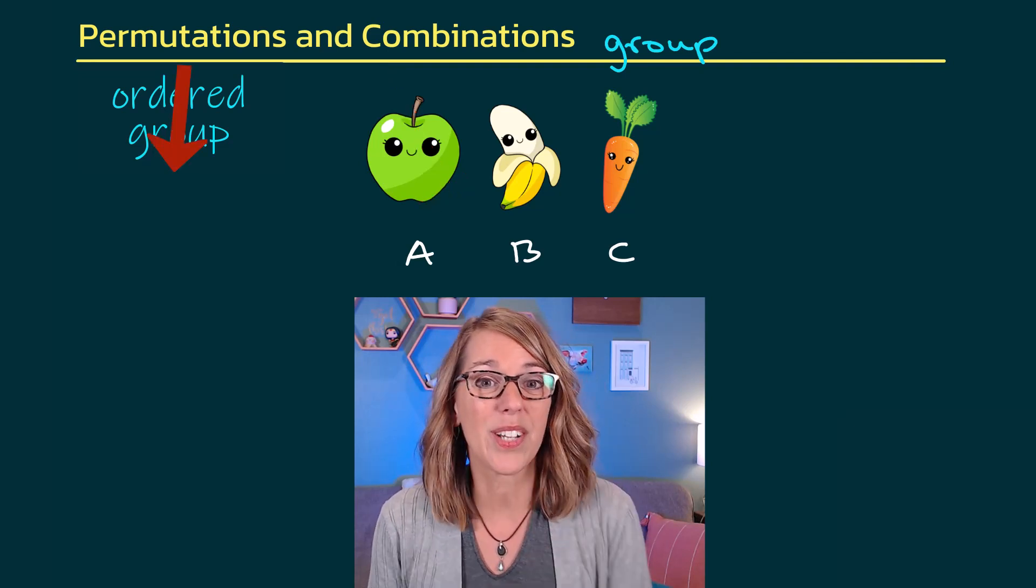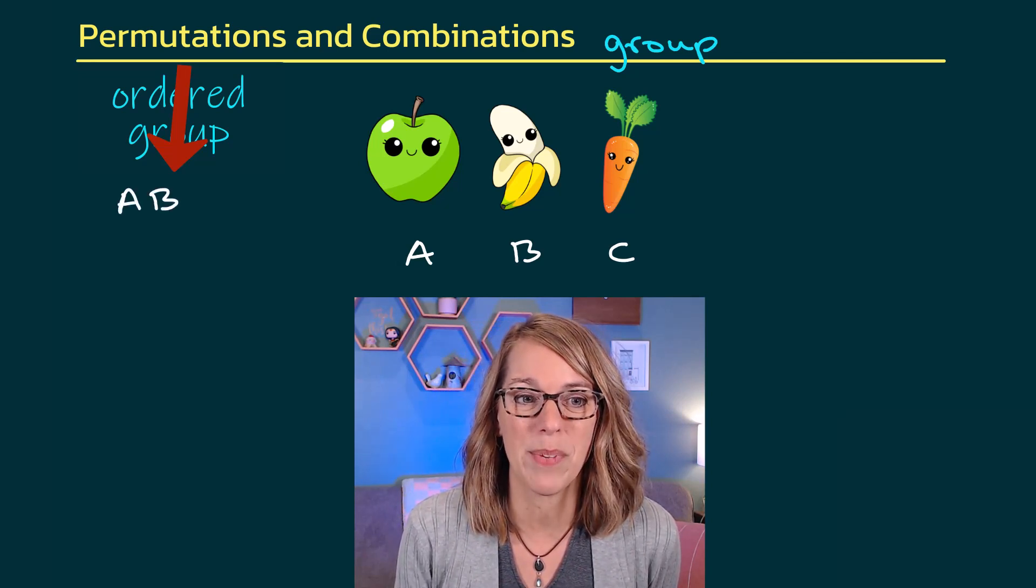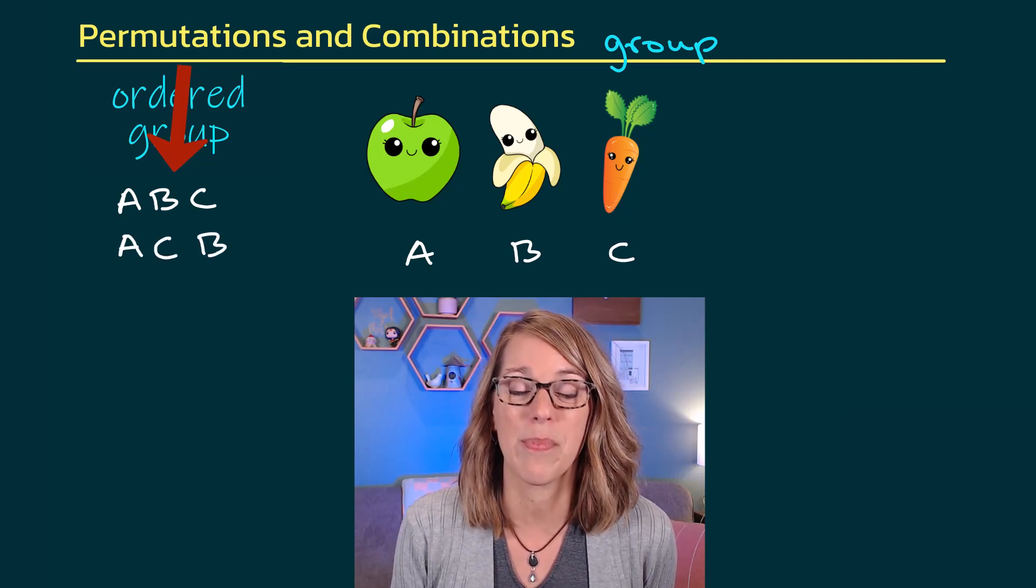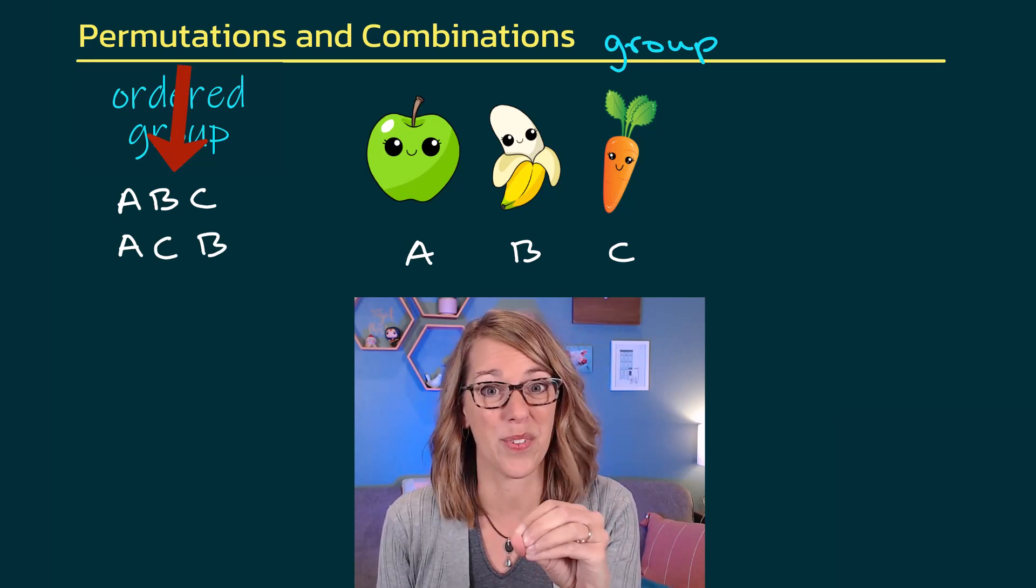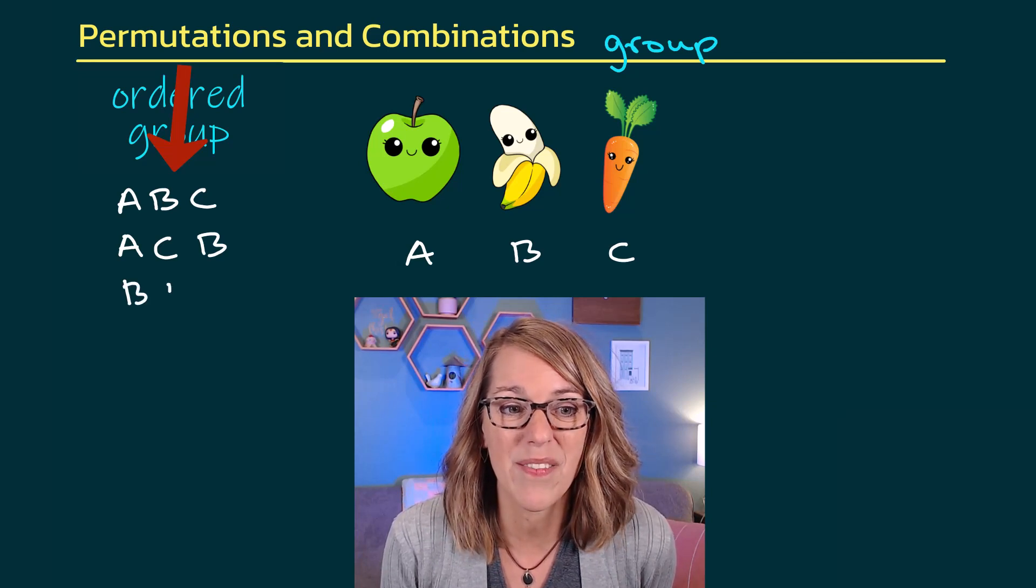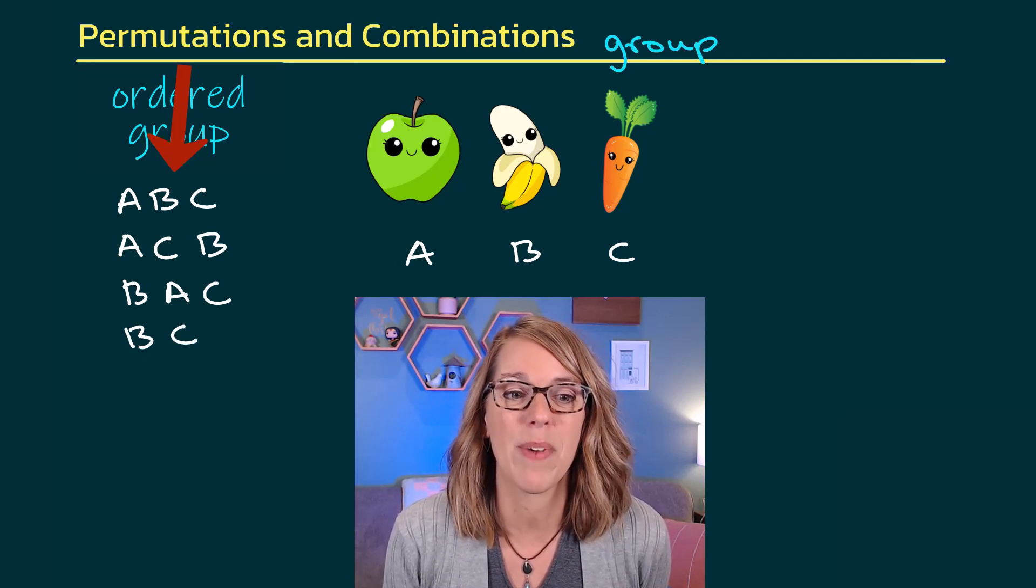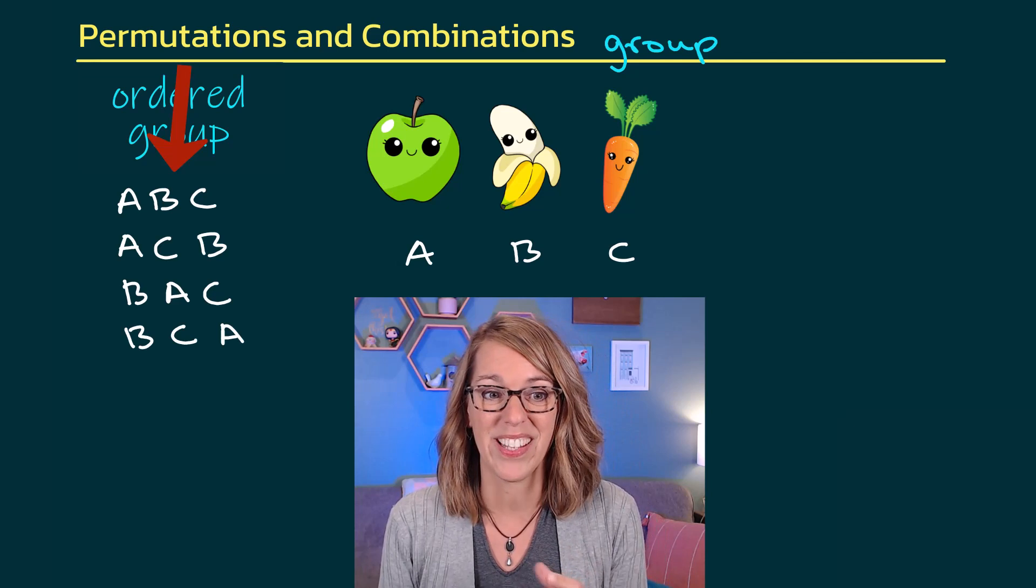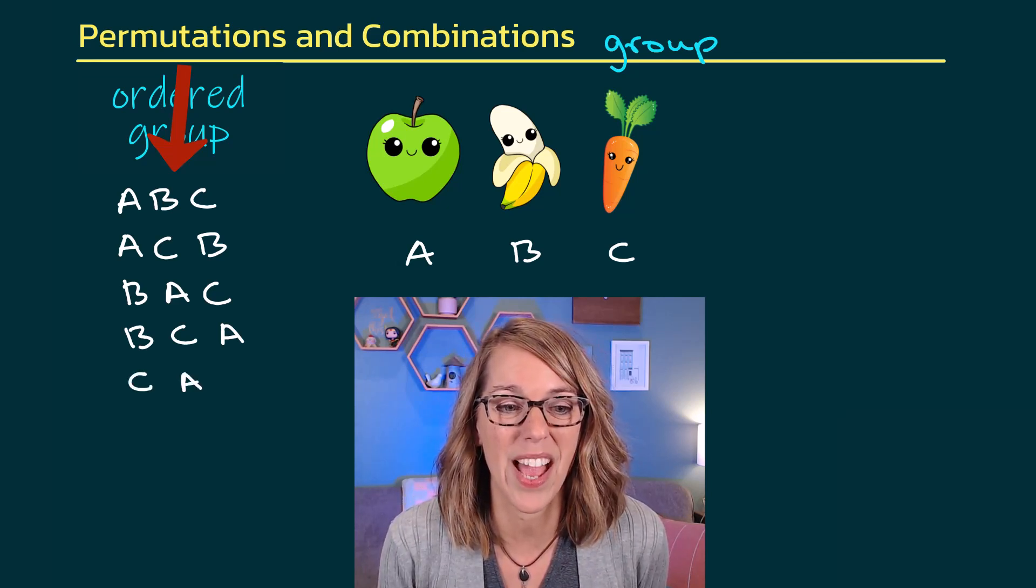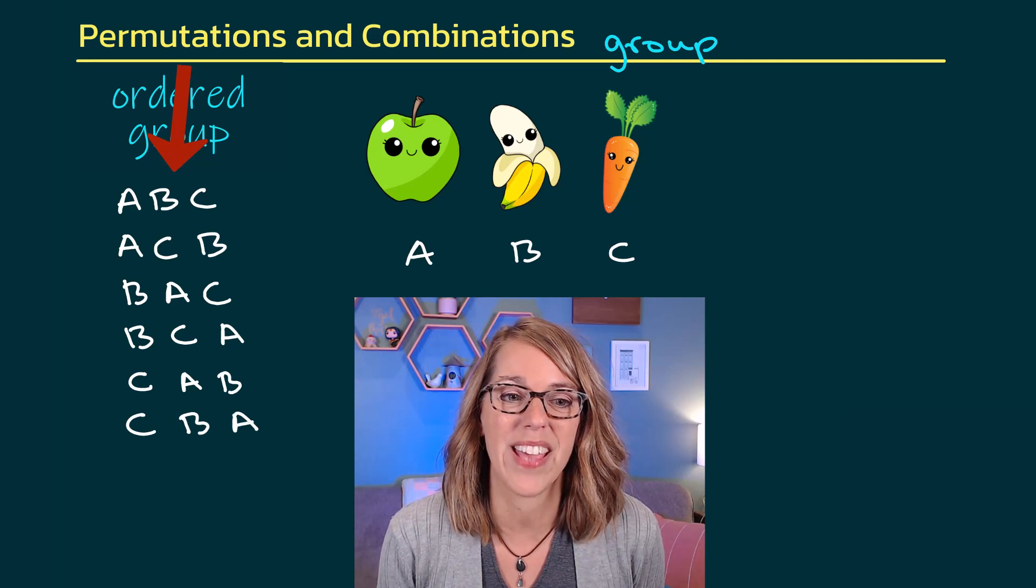If instead I were to look at permutations of these, I could have the apple, the banana, and the carrots, or I could do the apple first, the carrot second, and the banana third. This is a different ordered group, so this counts as a different permutation. Or I could start with the banana followed by an apple followed by the carrot, or the banana followed by the carrot followed by the apple. Finally, I could start with that carrot, followed by an apple followed by a banana, or the carrot followed by the banana followed by the apple.